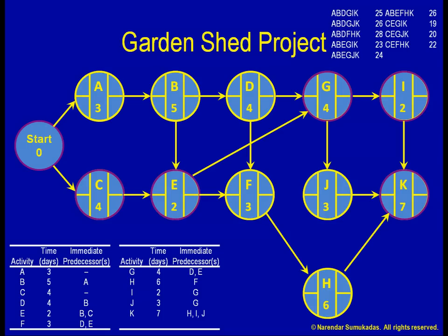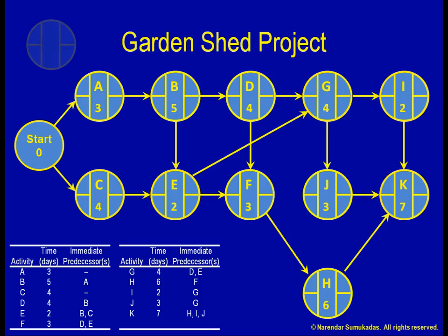Tracing every single path from beginning to end is fine for a small project, but can you imagine how many possible paths there will be for a larger project? There is a more methodical procedure available. In the four boxes for each activity, we are going to fill in some numbers. The first number is the Early Start Date (ES) — the earliest date by which the activity can possibly start. The second number is the Early Finish Date (EF) — the earliest date by which the activity can possibly finish.